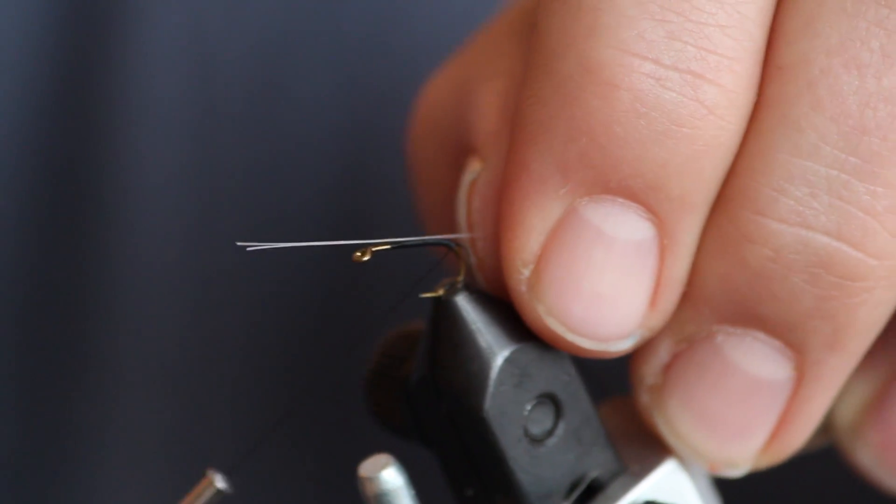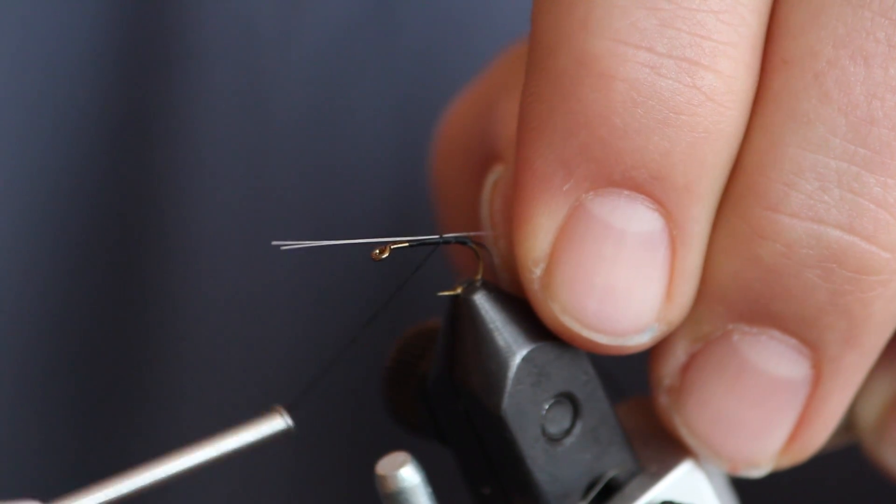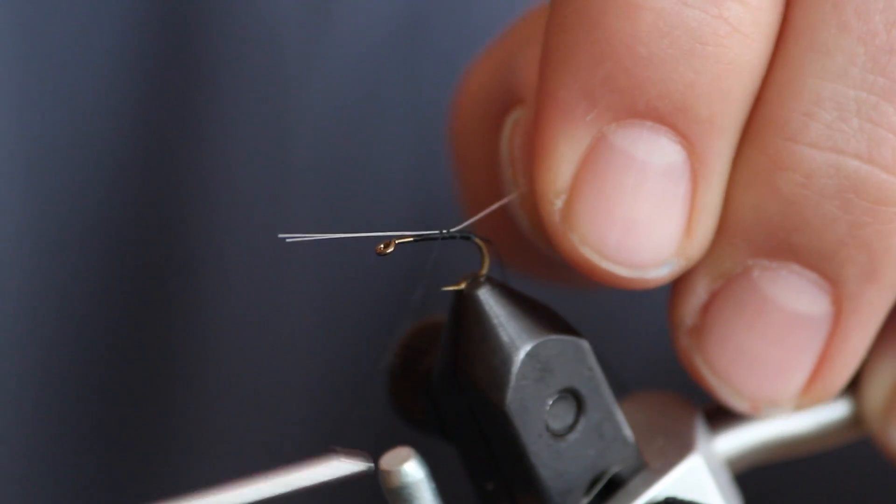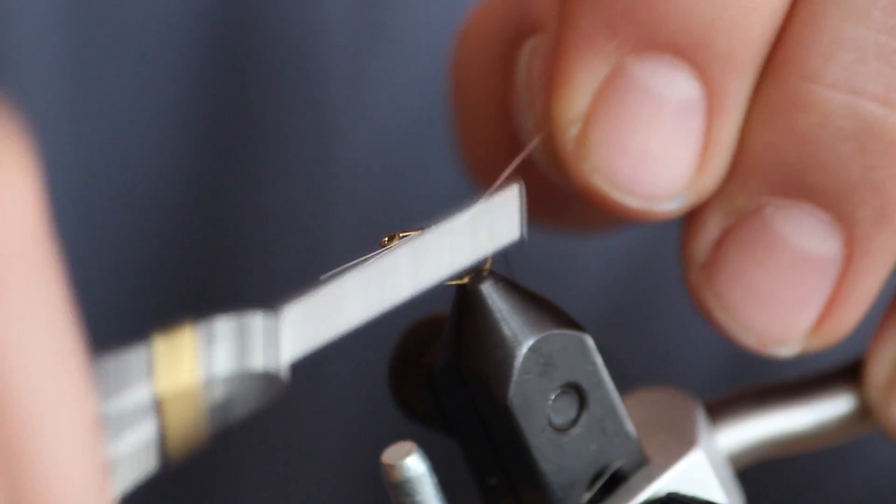Line up the microfibbets to about the length of the shank of the hook. This will be a good tail. Put them on the top of your hook and make sure they're lined up perfectly. Make several securing wraps towards the eye of the hook and back towards the bend.